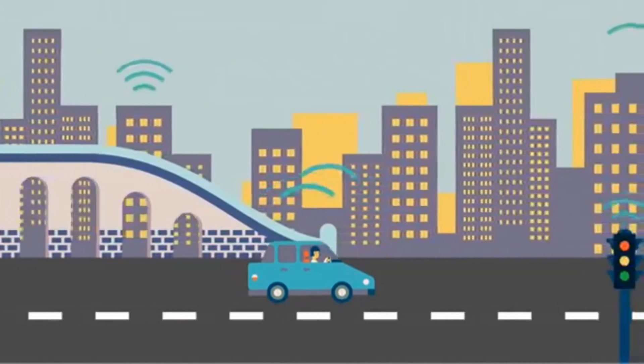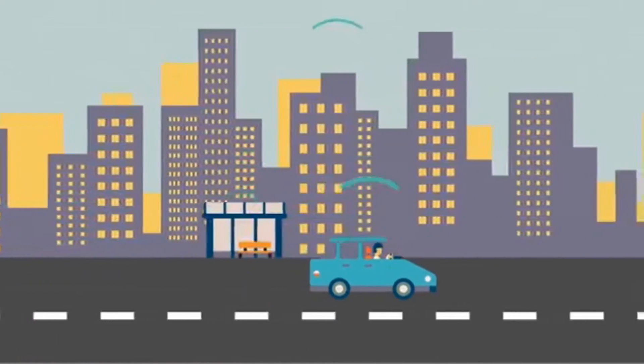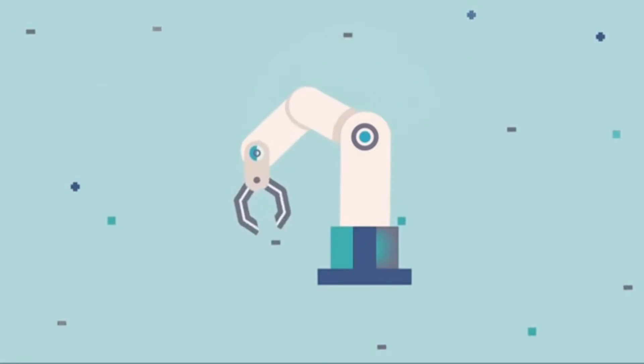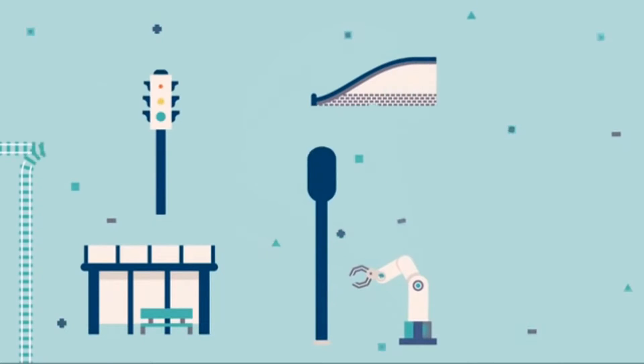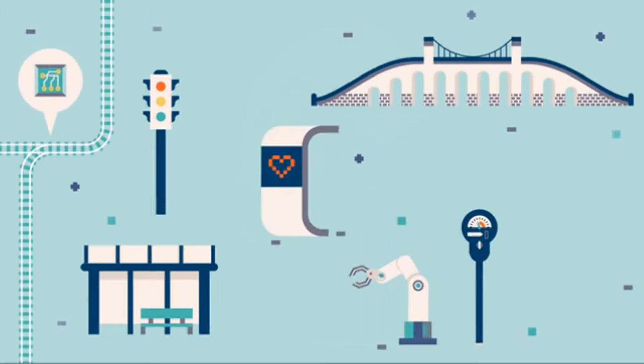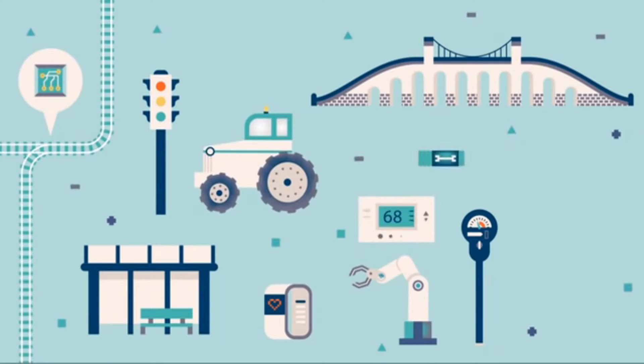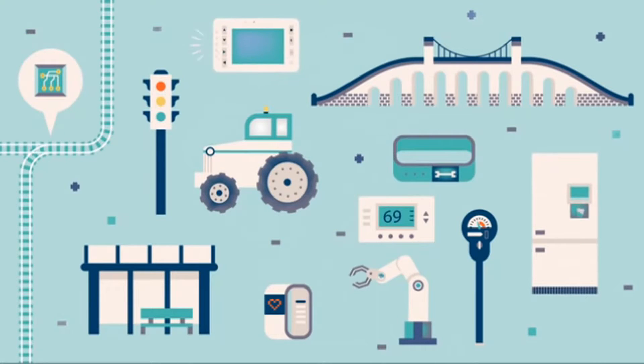But how exactly do all these devices share such large quantities of data? And how do we put that information to work? Whether we're improving the production of a factory, giving city residents real-time updates on where to park, or monitoring our personal health, it's the common Internet of Things platform that brings diverse information together and provides the common language for devices and apps to communicate with each other.